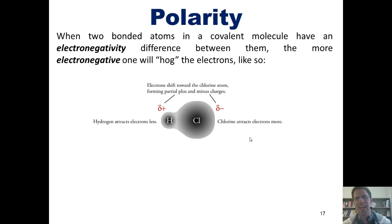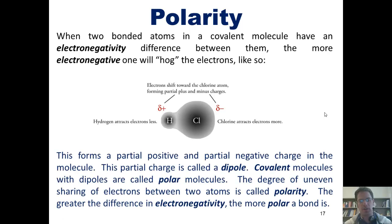However, because the chlorine is much more electronegative than the hydrogen, it hogs the electrons more to itself, creating a partial negative charge on the chlorine atom and a partial positive charge on the hydrogen atom. This partial charge difference is called a dipole. Covalent molecules with dipoles are called polar molecules. The degree of uneven sharing of electrons between two atoms is called polarity. The greater the difference in electronegativity, the more polar a bond is.